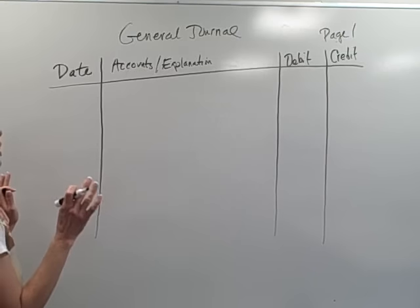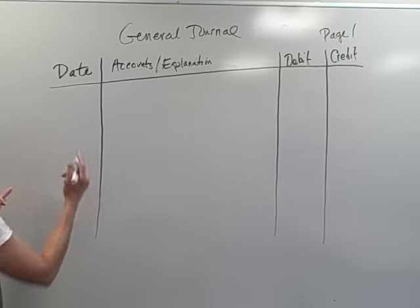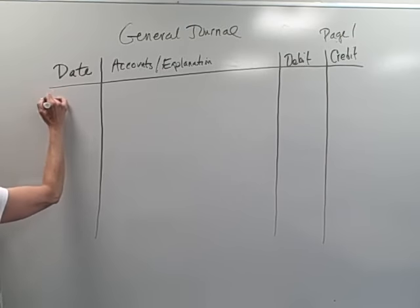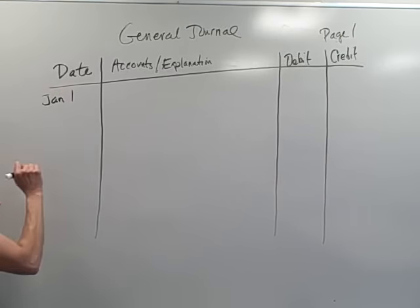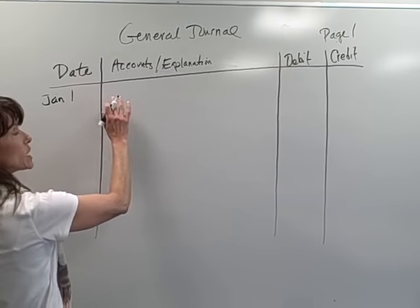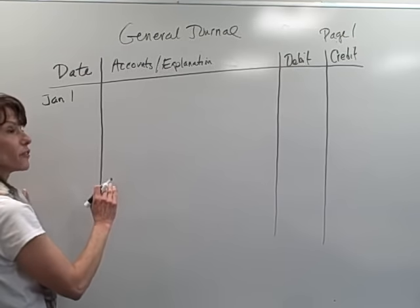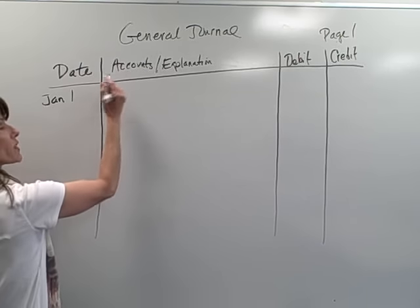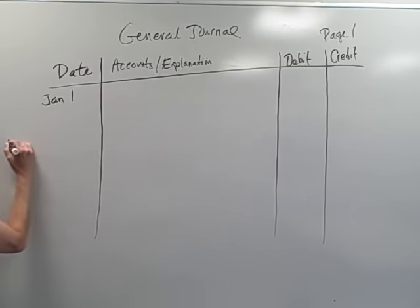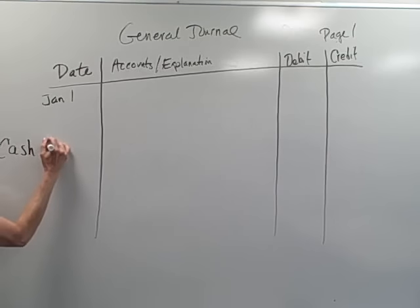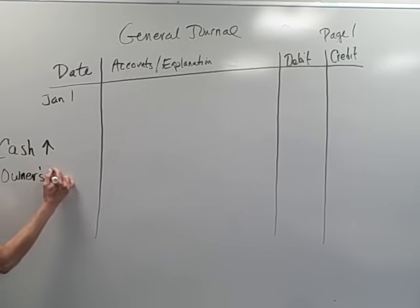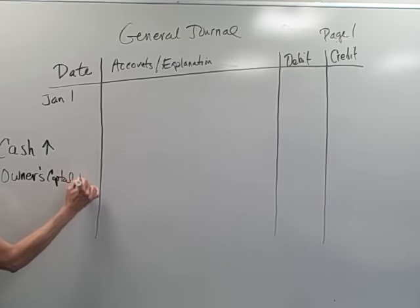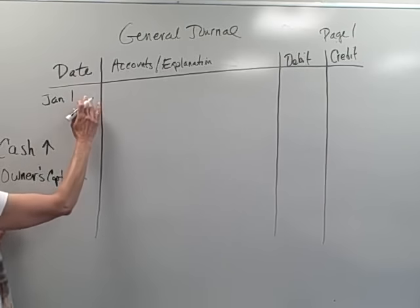Let's say that the owner invested some money in the business. Well, the first thing we always want to do is we want to put down the date. So let's say it was January the first and let's say that we need to look at the account that was debited first. If the owner invested money in the business, we know that cash is going up and we know that the owner's capital is going up as well.